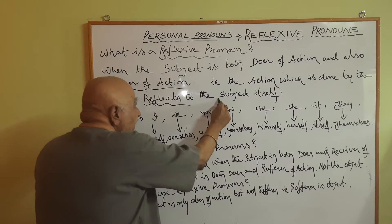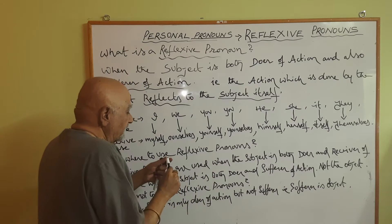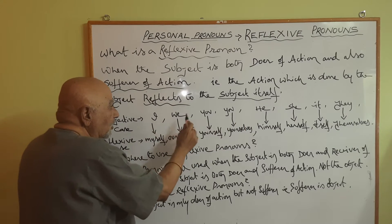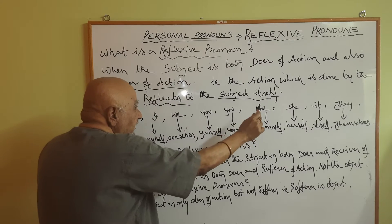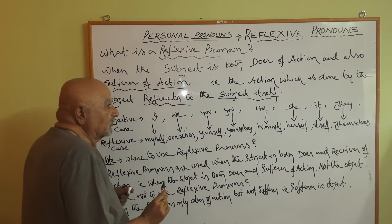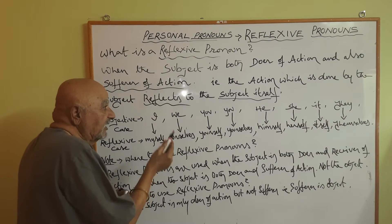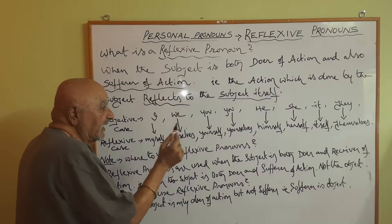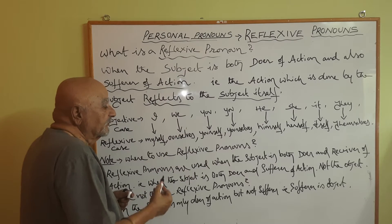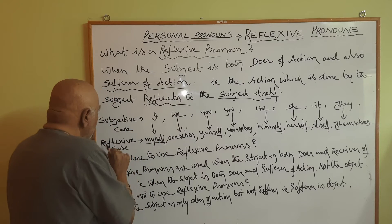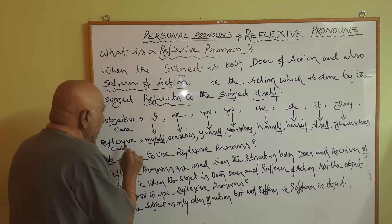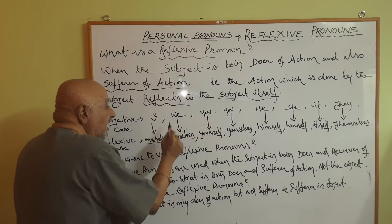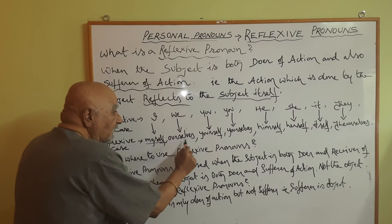Now, in the subjective case we have: I, we, you, you, he, she, it, they. These are the pronouns used as subject. When the action reflects back to the subject, we use reflexive forms. The reflexive case of 'I' is 'myself'. The reflexive case of 'we' is 'ourselves'. Singular 'you' becomes 'yourself'; plural 'you' becomes 'yourselves'.